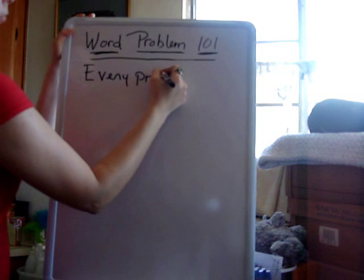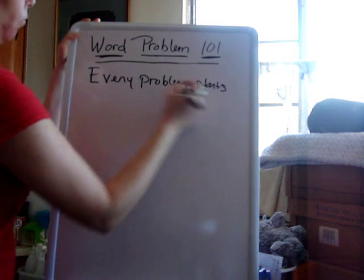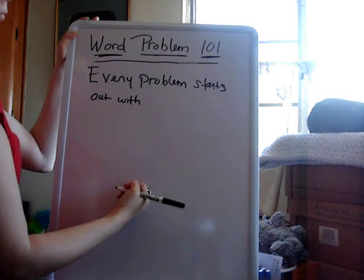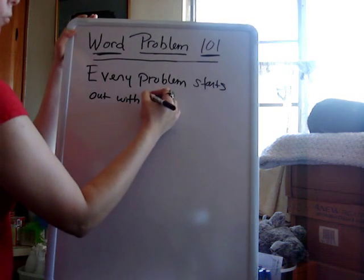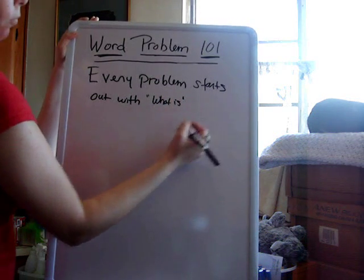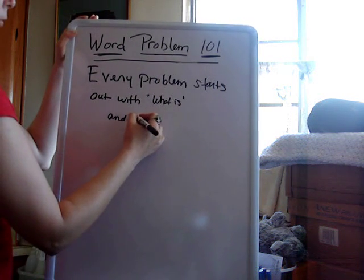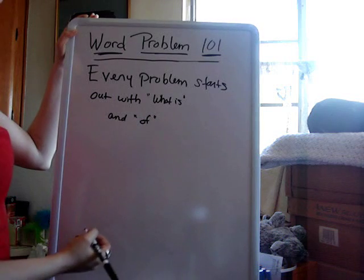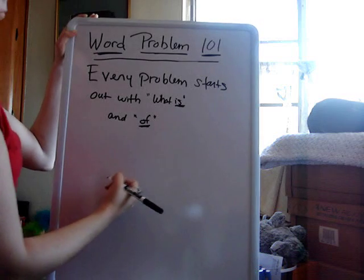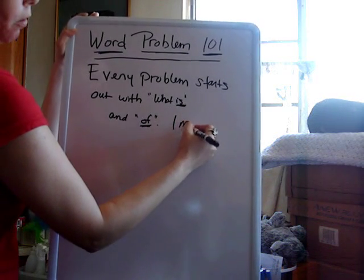Now, notice that every word problem — especially a percentage one — when you're trying to calculate a percentage or how many out of something is something, it starts out with something I like to call: 'what is' and 'of.' Notice the 'is' and the 'of.'